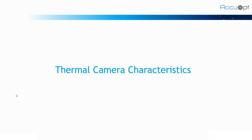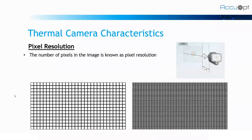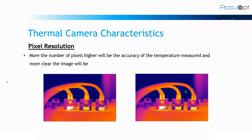Now we will see some thermal camera characteristics which are important while choosing or buying a thermal camera. Number one is the pixel resolution. The pixel resolution is known as the number of pixels in any image. More the number of pixels, more will be the accuracy of the temperature measured and clearer will be our image. As you can see here, the left image is clicked by the 80 by 80 pixel camera and the right one is clicked by the 384 by 288 pixel camera. The right image is more clear as compared to the left one.